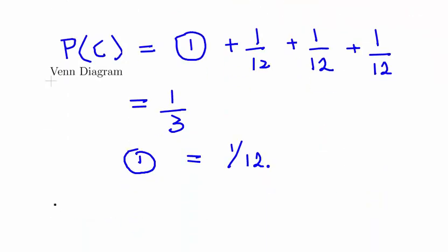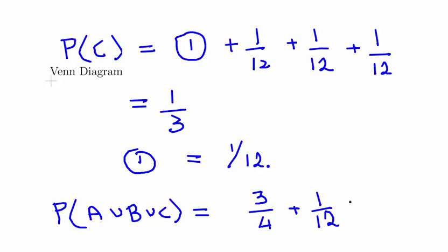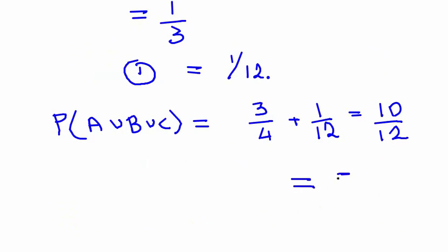The probability of A union B union C is essentially equal to 3 over 4, plus 1 over 12. And that actually would equal to 9, that would actually equal to 9 over 12, plus 1 over 12, which is 10 over 12. Or in other words, 5 over 6.